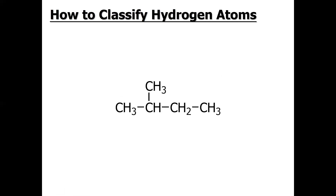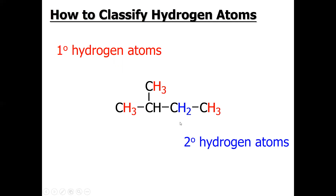Let's see how we can classify the hydrogen atom. If you have practice and can easily identify the degree of carbon, then classifying hydrogen is no problem. If hydrogen is bonded with a primary carbon or one-degree carbon, then that hydrogen is known as one-degree hydrogen. Similarly, if hydrogen is bonded with a two-degree carbon, it is a two-degree hydrogen. If hydrogen is bonded with a three-degree carbon, it is a three-degree hydrogen. There is no four-degree hydrogen because there is no possibility for carbon to have a fourth bond available for hydrogen when bonded to four carbons.